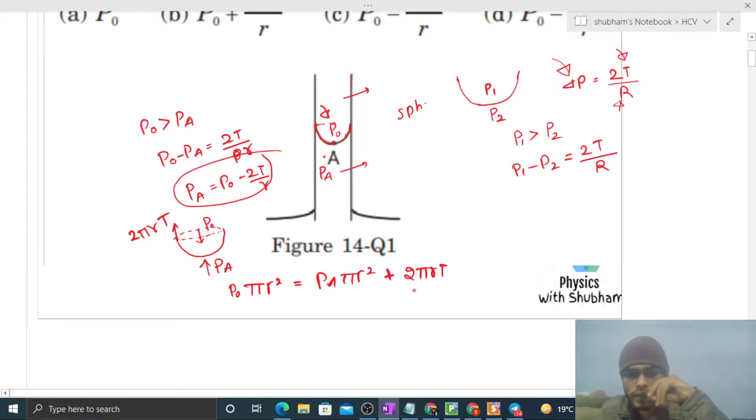So here you can see that P0 minus PA into πr² is equal to 2πrT. So here π cancels, one r cancels, and what you are getting is 2T divided by r equals P0 minus PA. So PA is equal to P0 minus 2T divided by r.